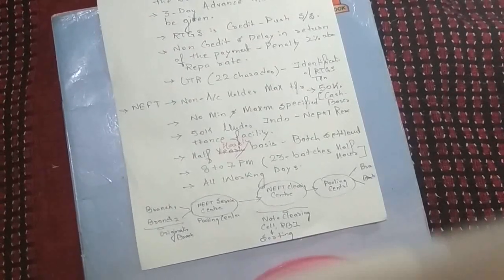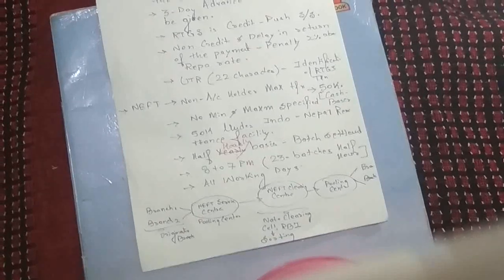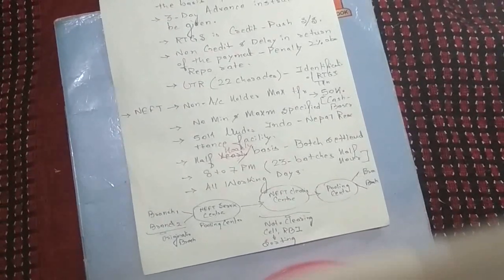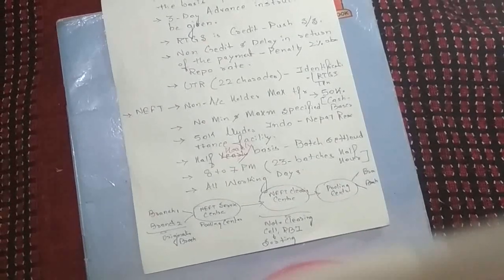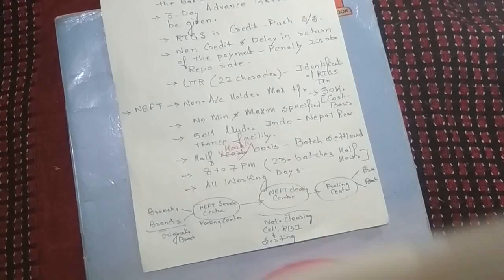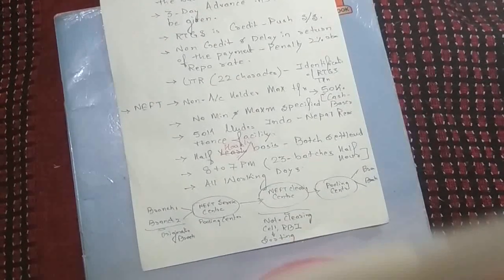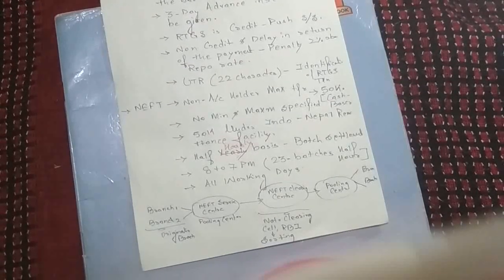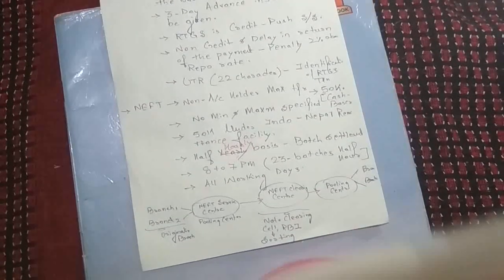Say ABC Bank has many branches. Those branches enter transaction information into the system. After submission, that message or transaction information goes to the pooling center, which belongs to the bank itself. The pooling center gathers NEFT information from all branches for different destinations. At the pooling center, a batch is made, and after half an hour, whatever NEFT information comes from various branches is put into the batch and pushed forward to the NEFT National Clearing Center, which is the national clearing cell of the RBI.